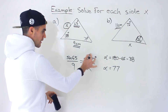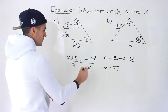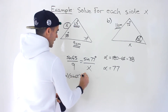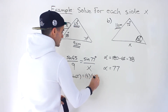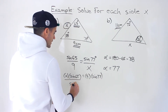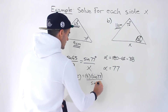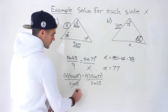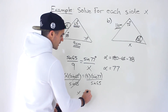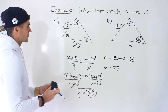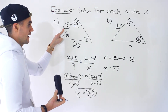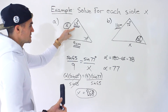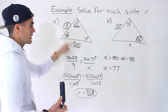Now we have an equation with just one variable to solve for x. We can cross multiply: x times sine of 65 equals 9 times sine of 77. Then we divide both sides by sine of 65 — those cancel out — and when you plug all of this into your calculator you end up with approximately 9.68. So that's the answer for this first triangle; that's the length of side x. First we found the third angle, then we set up the sine law with that angle, its opposite side, and the side we were solving for.